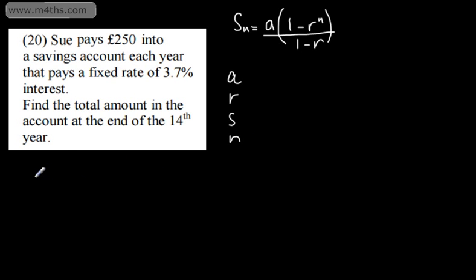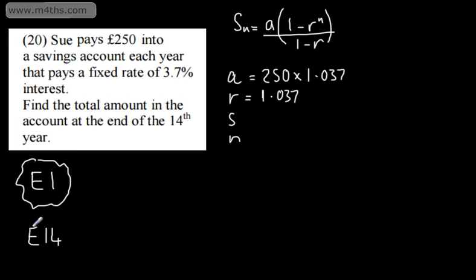I'm going to base my a on the end of year one. You don't have to. I prefer to do this. So what she's doing is putting £250 in. And by the end of year one, we're going to have the 3.7%. So I need to multiply this by the ratio. 3.7% will give me a ratio of 1.037. So my first term is going to be 250 times by 1.037, because that's at the end of year one. What I'm looking for is the end of year 14. Remember, she's putting in the £250 each year. We're looking for the sum and n is going to be 14.